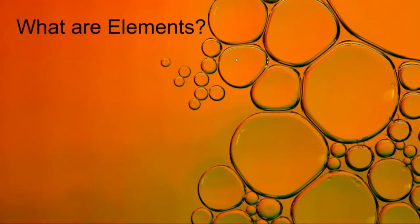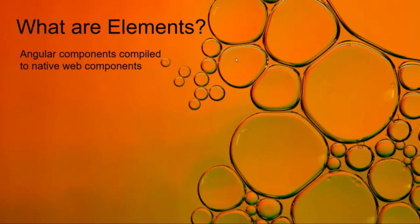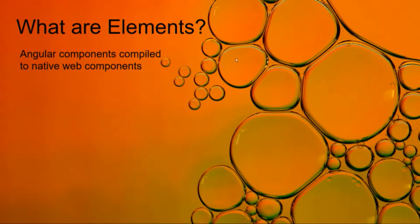So, what are elements? Elements are Angular components that compile to native web components. Why is that useful? There are a lot of people that use these for things like upgrade paths from one framework to Angular, or to pepper into their marketing sites like WordPress — if they want the same look and feel they use on their other sites, or they know Angular and don't want to mess around with the WordPress way of things. They can just compile the element and put it in there. There are other uses if you just want the flexibility to use your component in other frameworks or in native HTML pages, like we're going to be showing in this example.